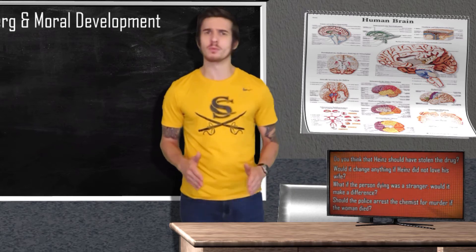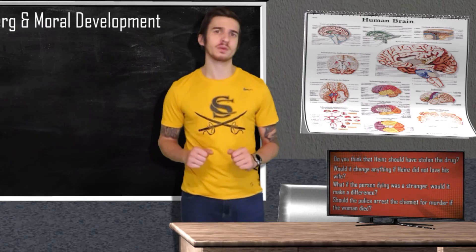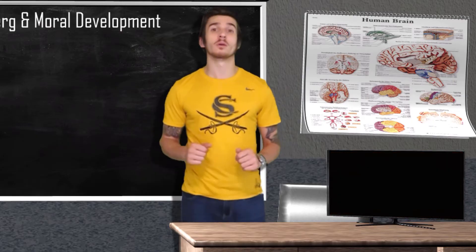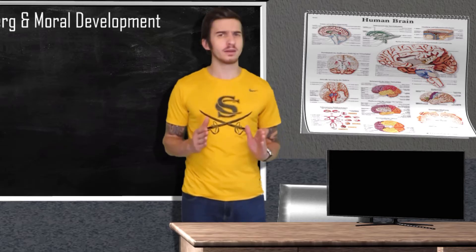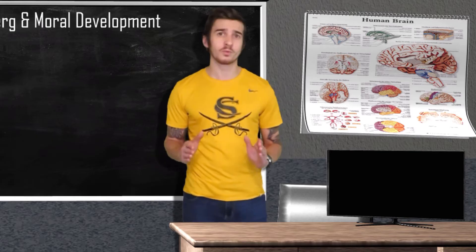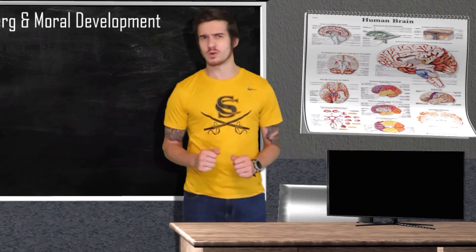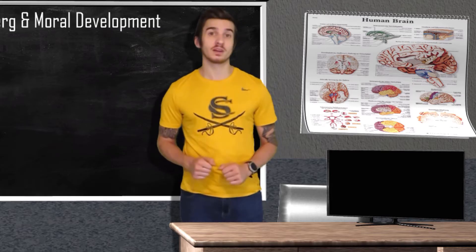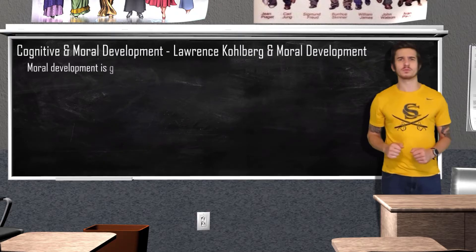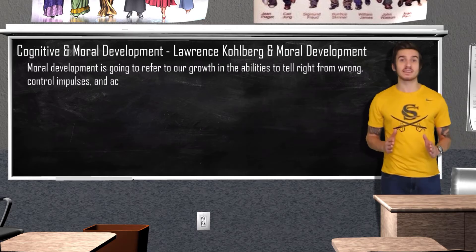These questions were presented to 72 young men from Chicago ranging from ages 10 to 16. It's worth noting that Kohlberg using a small sample from one demographic led to harsh criticisms, but his research still holds ground on how our morals develop. The results provided Kohlberg with the basis for his theory of moral development, which refers to our growth in the ability to tell right from wrong, control impulses, and act ethically.